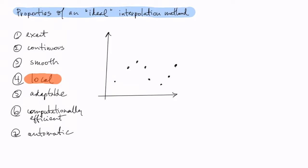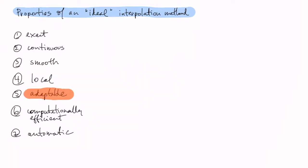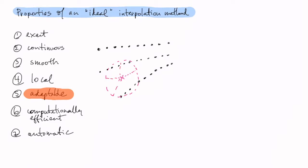The fourth property is locality: if we want to interpolate at a given location, we will only use neighbors in the vicinity of the point where we want to interpolate — we will not look for points that are far away. The fifth property is adaptability: the function should give realistic results for data distributions that are not normal or that are anisotropic. This happens a lot in GIS — for example, with bathymetric data collected by a boat following certain lines.